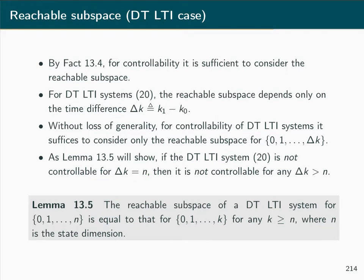Lemma 13.5 shows that if the discrete time linear time invariant system is not controllable for Δk = n (where n is the dimension of the state space), then it will not be controllable for any Δk greater than n. So we only need to extend the time period up to Δk = n to determine controllability. Specifically, the reachable subspace for the period from 0 to n remains the same as for any longer time period.